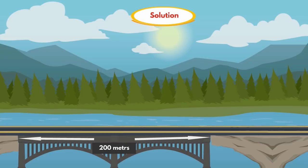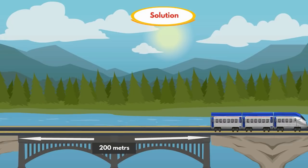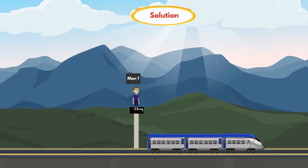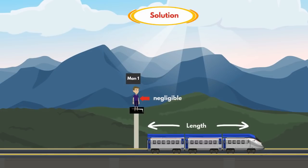Remember: if a train is crossing any object with a certain length, like a platform, bridge, or any object, in that case we have to consider train length plus object length as the distance. If the train is crossing any object with negligible length, like a pole, human, or any object, in that case we have to consider only the train length as the distance — we don't consider the object length because it is negligible.